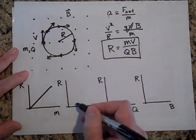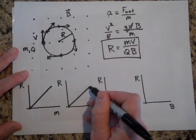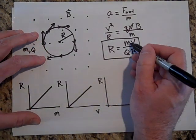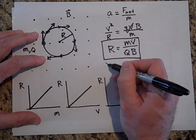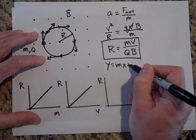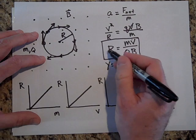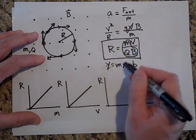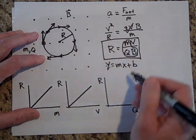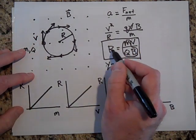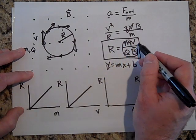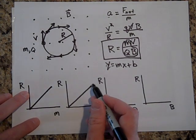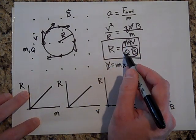Same thing with V. V is directly proportional to R. R is directly proportional to V. So you draw it as a straight line. Think of this as, for this one, for R and V. Think of this as Y equals MX plus B, where this is Y is equal to M. This would be the slope, M, times X, but V is X, plus zero. So this is Y equals MX plus zero. So that's the equation for a straight line. What's the slope of this line? Apparently, it's M over QB.